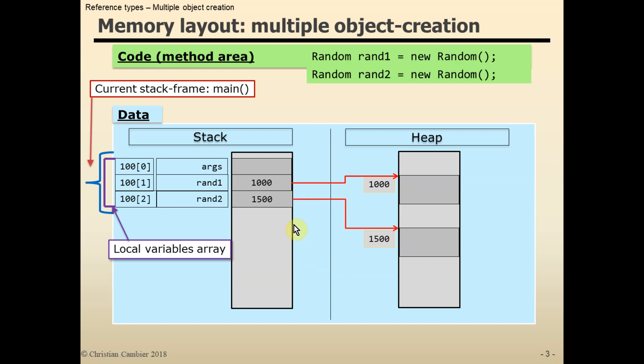Now, the random objects are drawn here as empty grey rectangles. In order to know what they really look like, we need to look at the Java implementation code of the random class, which is something I'll demonstrate in a future video, but then with a custom class.